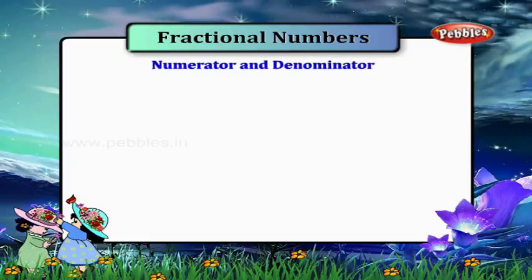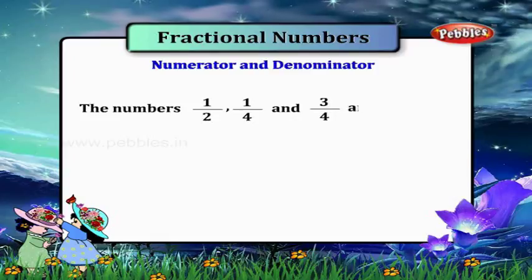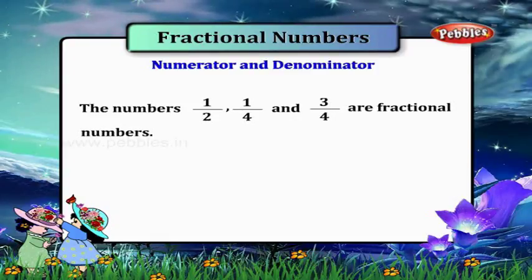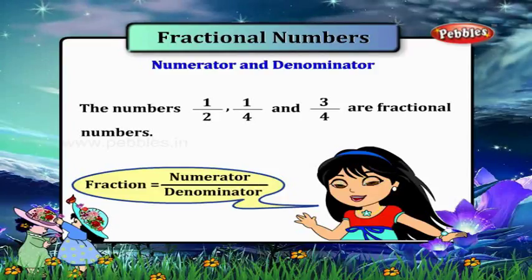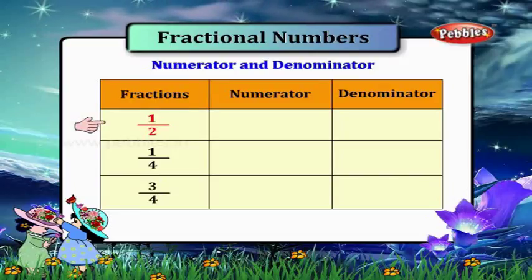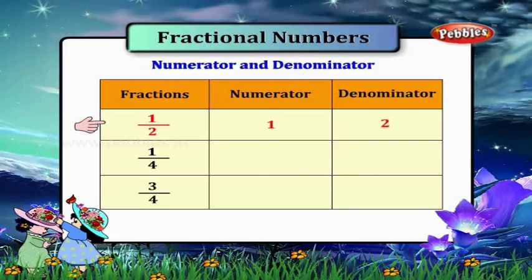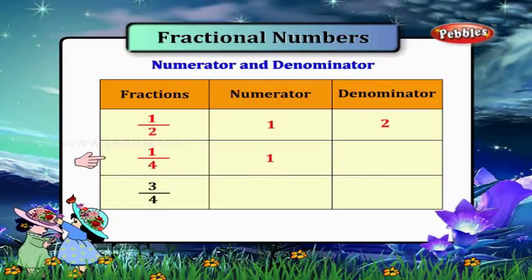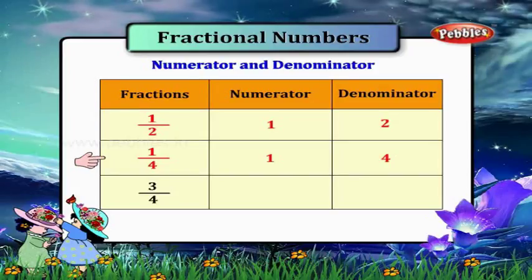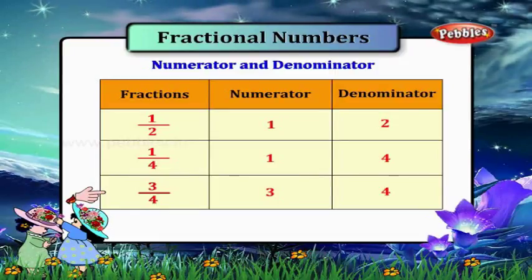Numerator and denominator. The numbers one by two, one by four, and three by four are fractional numbers. Now in the fraction one by two, one is the numerator and two is the denominator. In the fraction one by four, one is the numerator and four is the denominator. Now you tell me, in the fraction three by four, what is three? Three is the numerator. Four is the denominator.